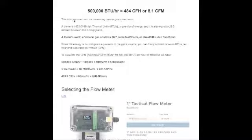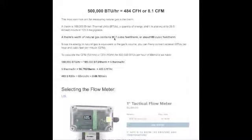The most common unit for measuring natural gas is a therm. A therm is 100,000 BTUs. A therm's worth of energy contains 96.7 cubic feet per therm, or about 100 cubic feet per therm.